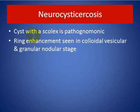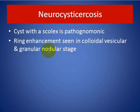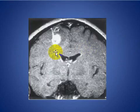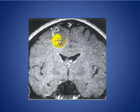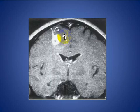In neurocysticercosis, a cyst with a scolex is pathognomonic. Ring enhancement is seen in the colloidal vesicular and granular nodular stages. Here on this coronal MRI image, a leptomeningeal enhancing area appears to extend to the brain surface with a solitary neurocysticercosis cyst, showing associated inflammatory changes at the surface.